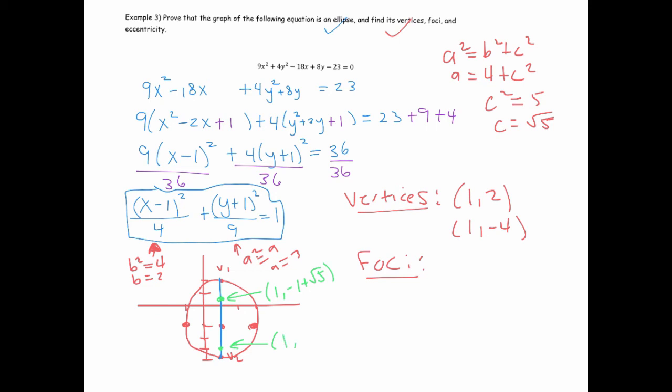It would have coordinates 1, and then moving from the center I would just go from the center here which is at 1 negative 1, I would go from negative 1 but I would minus the square root of 5. So those are the coordinates of my foci.